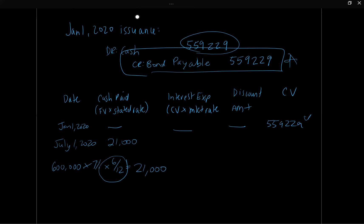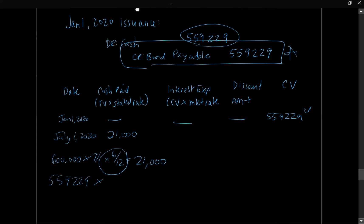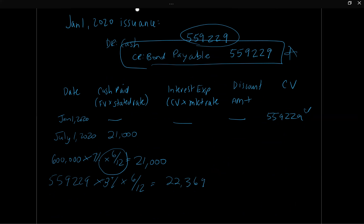Now for interest expense: the carrying value of $559,229 times the market interest rate of 8% times 6/12 gives us $22,369. The discount amortized is simply the difference between interest expense and cash paid: $22,369 − $21,000 = $1,369.